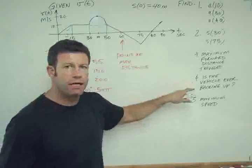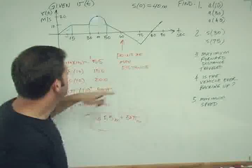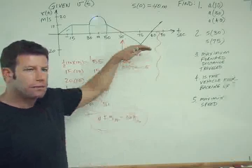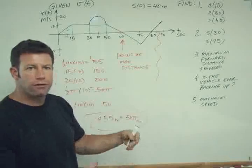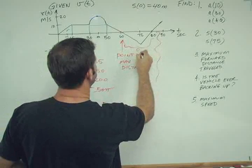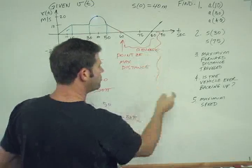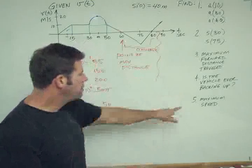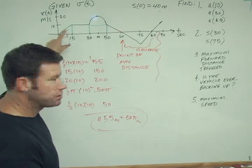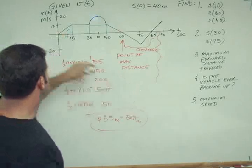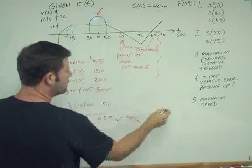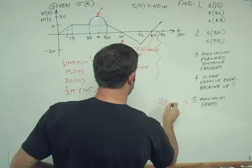So now the next question, number four, I think I've already answered. Is the vehicle ever backing up? Well, yeah, sure. Any time that the velocity is south of the axis, we're going backwards, right? The velocity is negative, we're backing up. We're in reverse. So during this whole time here, we're in reverse. So the answer is yes. And then the last one, the maximum speed. Well, this is a graph of velocity, which is analogous to speed. So maximum speed is going to be wherever this number is the greatest, right? And we can see that that happens here, and it's 20. So the maximum speed is going to be 20 meters per second.